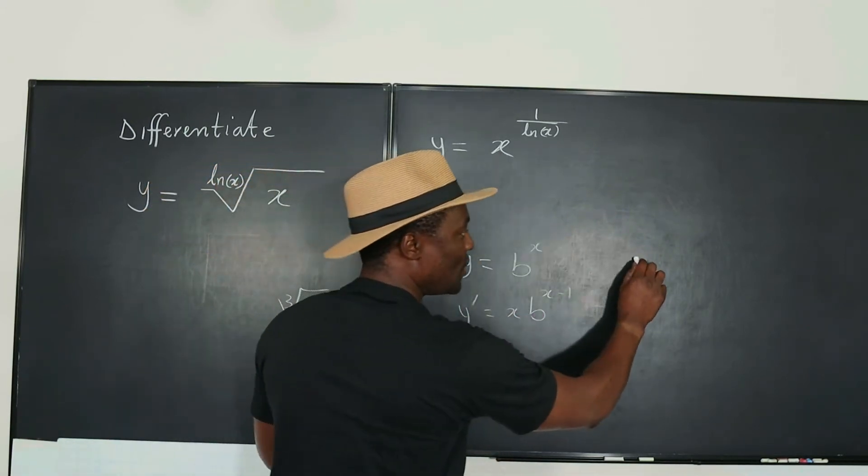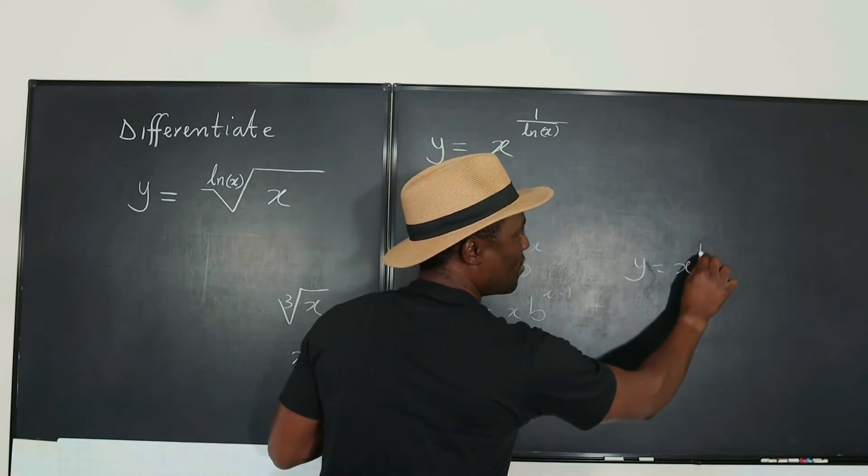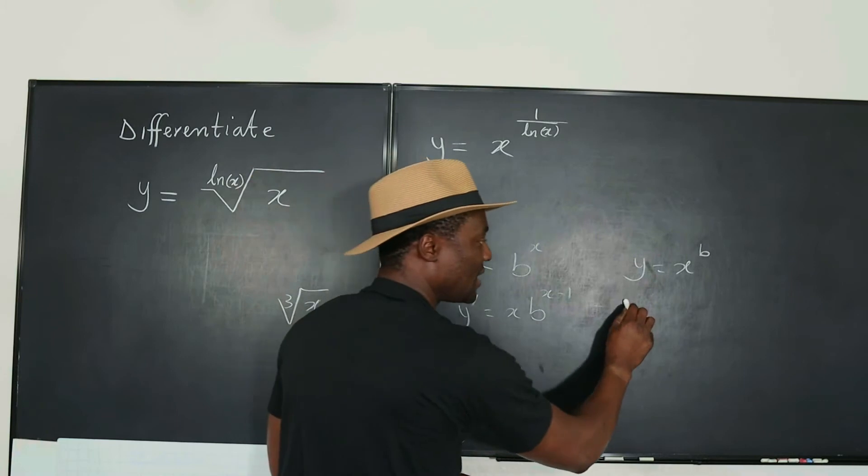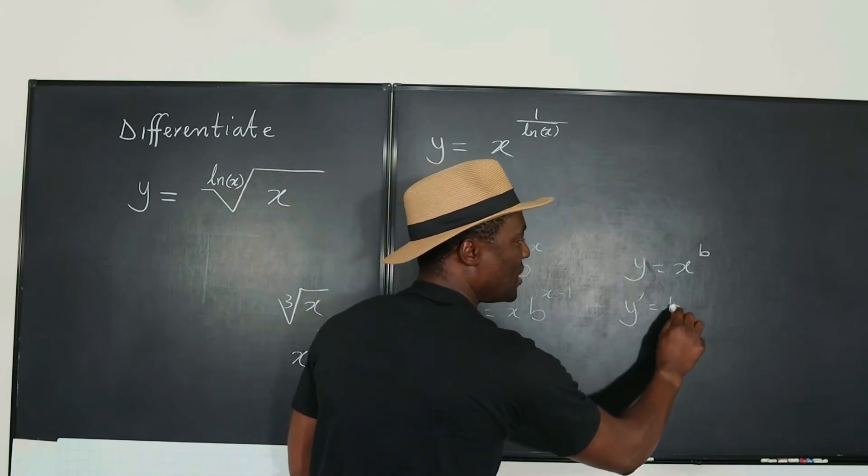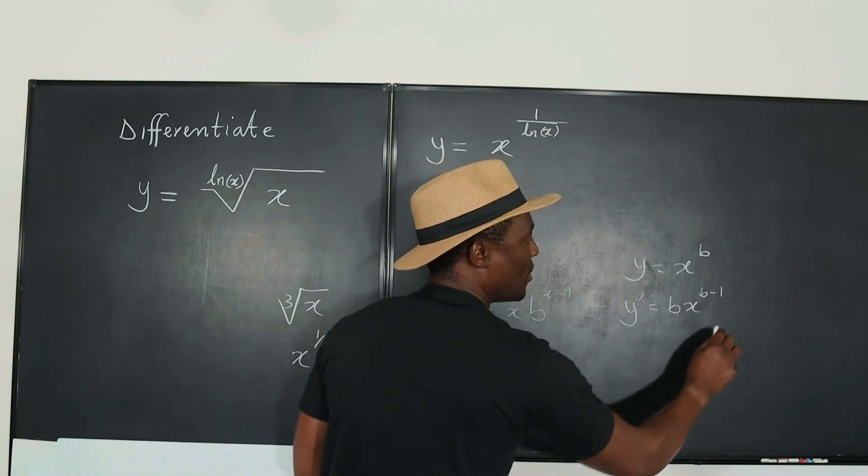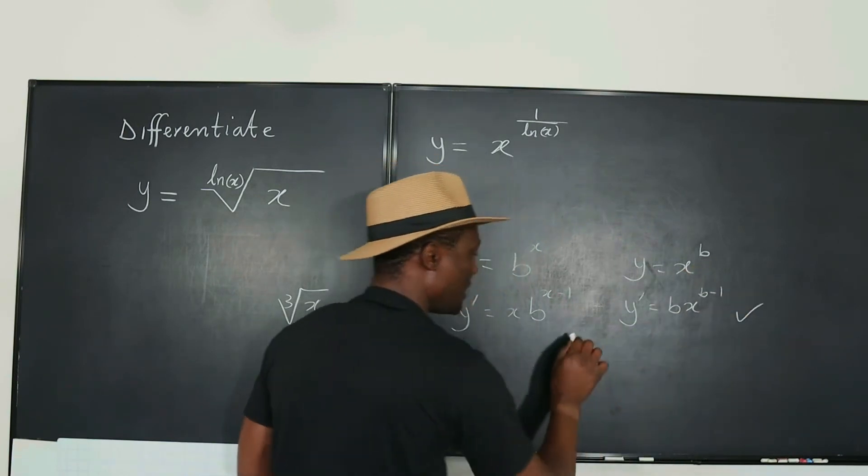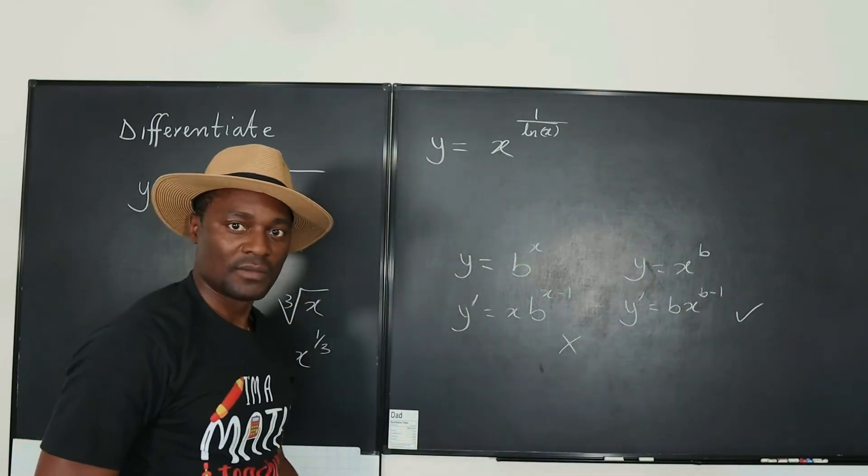So this only works if you do y equals x raised to the power b. You can see that the positions are switched and now you can say that y prime is b x raised to the power b minus 1, because this is a variable and this is a constant. So this works, this does not work. And that's the situation.